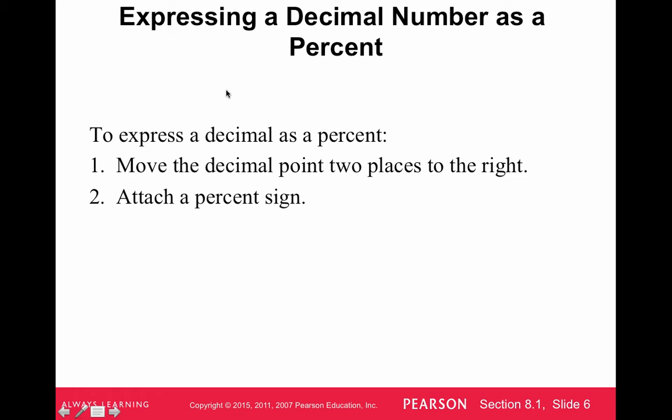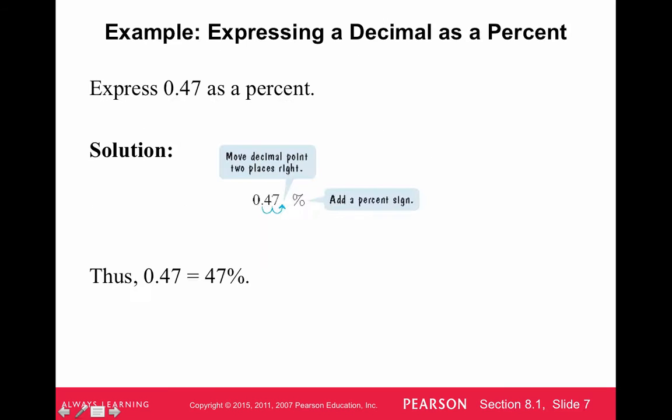Let's say we have a decimal, and we want to express that as a percent, so then we just, we already have the decimal, so we just multiply by 100, which they say move the decimal two places to the right, which is the same as multiplying by 100, and attach a percent sign. So, if we have .47 as a percent, then it's 47%.